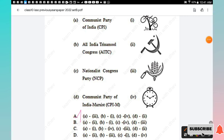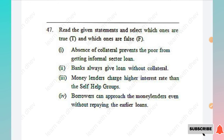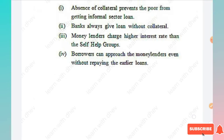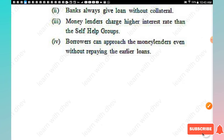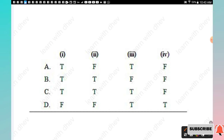Question 47: Read the given statements and select which are true and false. Absence of collateral prevents the poor from getting informal sector loans — False. Banks always give loans without collateral — False. Money lenders charge higher interest rates than self-help groups — True. Borrowers can approach money lenders even without repaying earlier loans — True. So the answer is False, False, True, True — Option D.